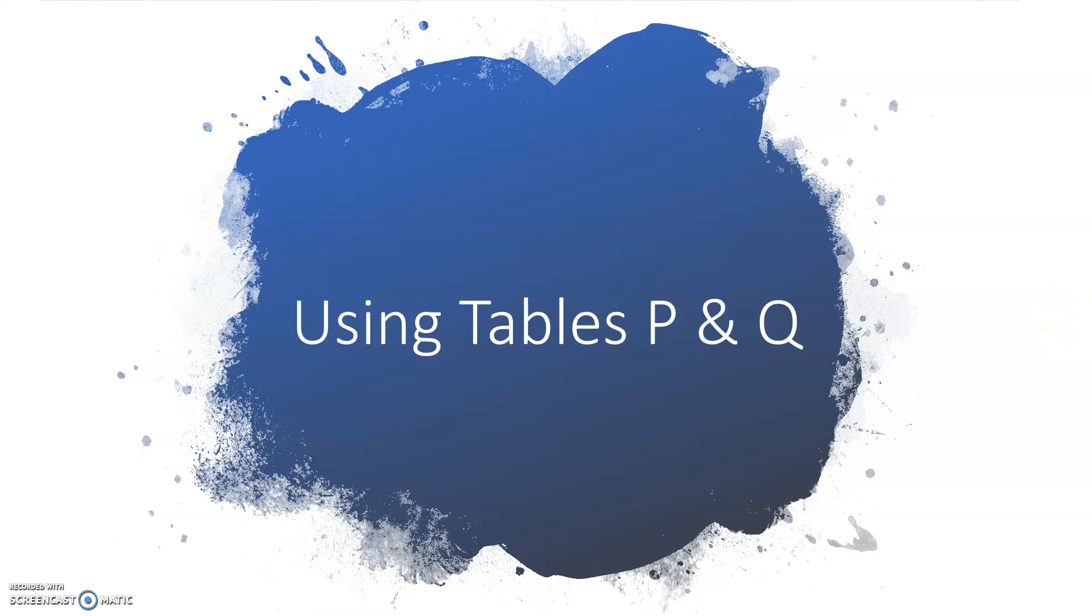So today we're going to take a look at tables P and Q on the reference tables. These are going to be tables that help us to identify and name the different types of hydrocarbons. Again, hydrocarbons are substances, organic compounds, that contain only hydrogen and carbon.